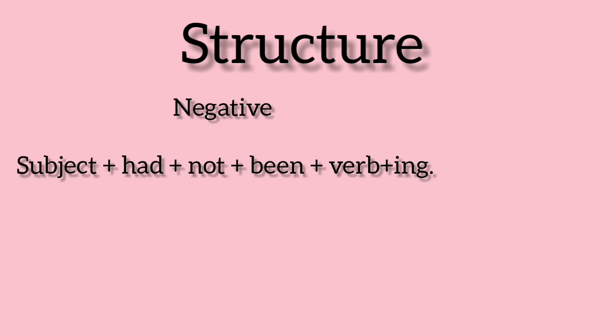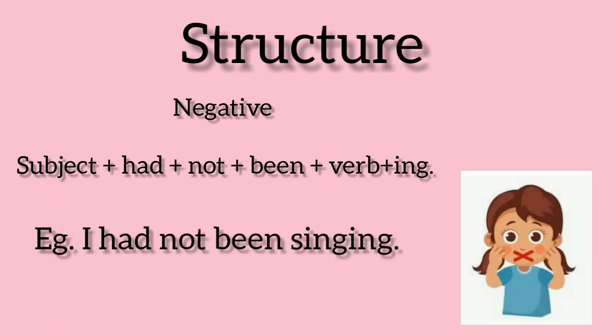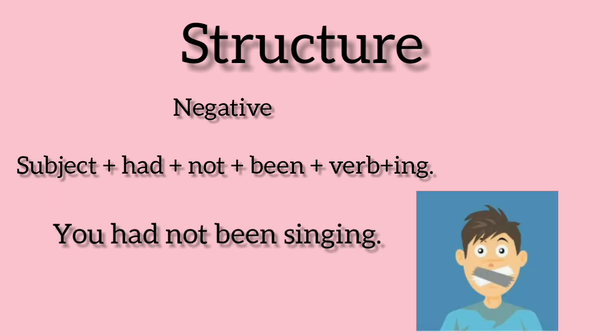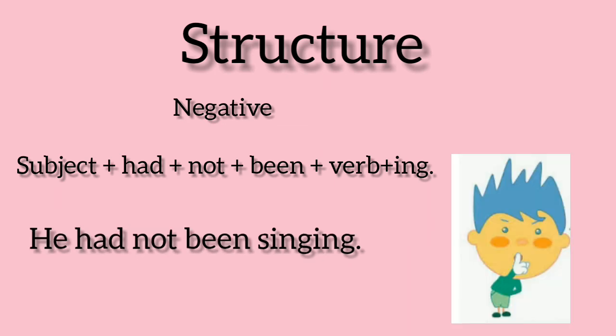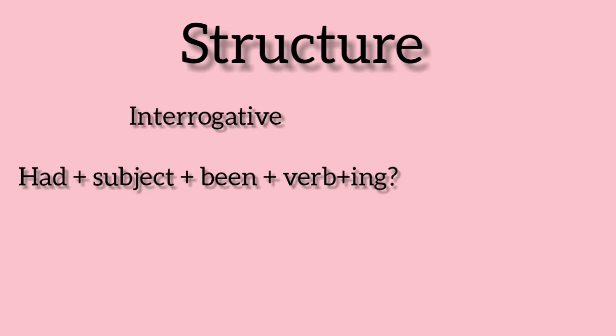For negative sentences, the structure is: subject plus had not plus been plus verb in the -ing form. For example: 'I had not been singing,' 'You had not been singing,' and 'He had not been singing.'